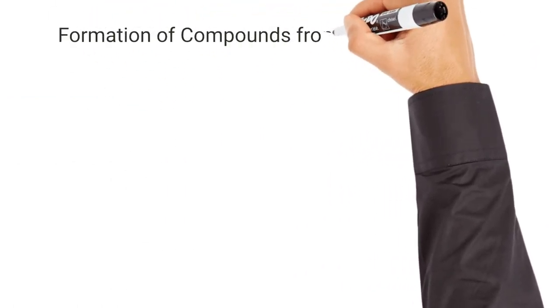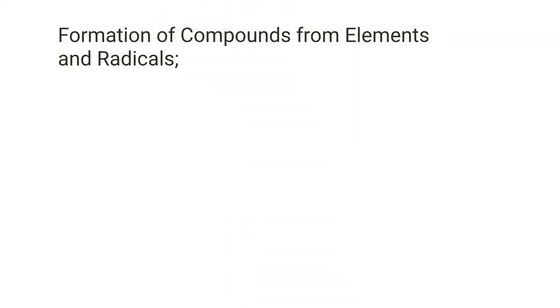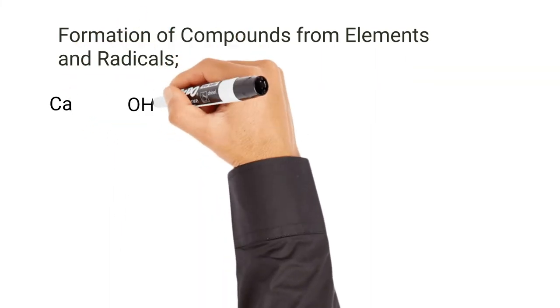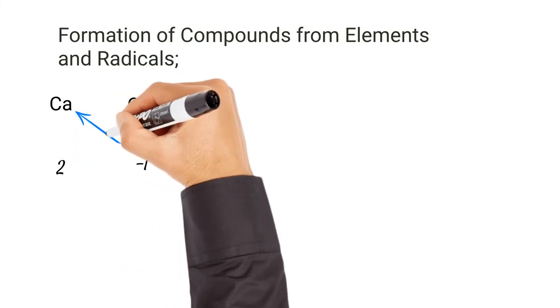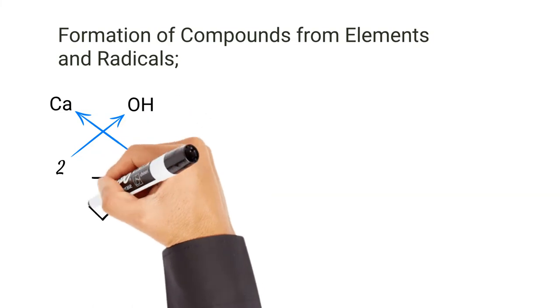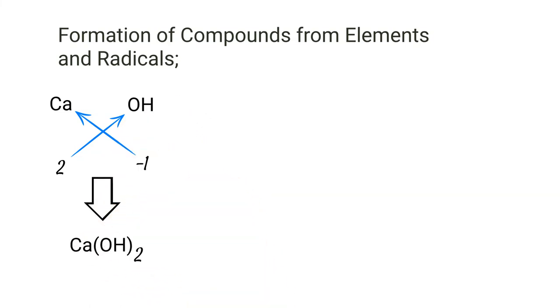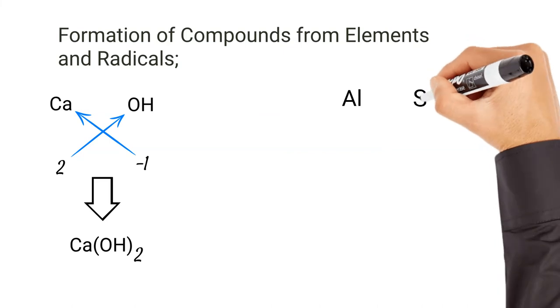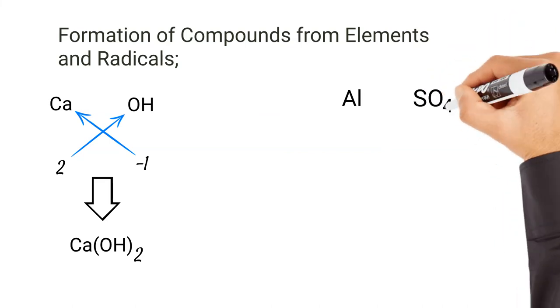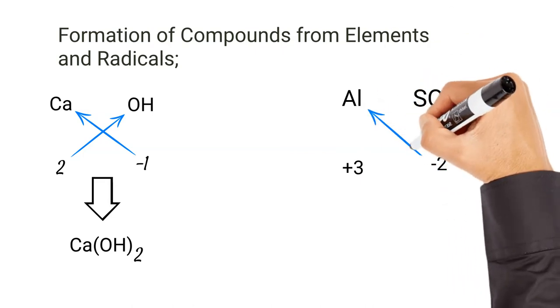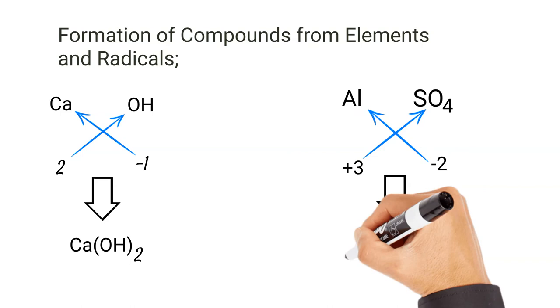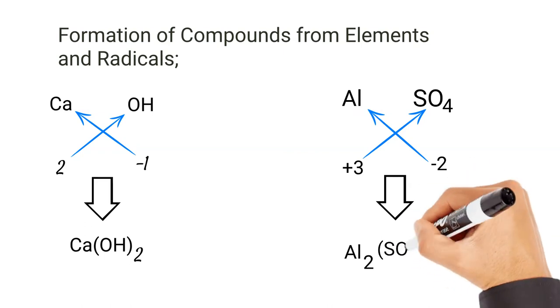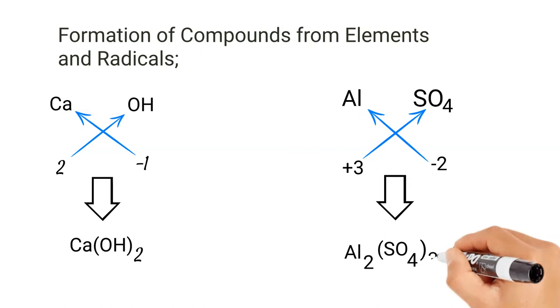We can form compounds from elements and radicals by knowing their valencies. For example, calcium and OH: calcium is +2, OH is -1. When they cross, we have Ca(OH)2, calcium hydroxide. Aluminum and SO4: aluminum is +3, SO4 is -2. When they cross, you have Al2(SO4)3, aluminum sulfate.